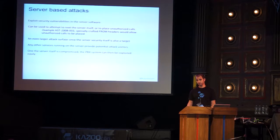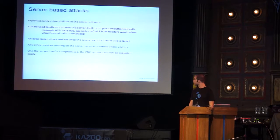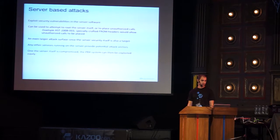Once you have access to the server, it's very easy to exploit the phone system running on it. The phone system software itself can be exploited — a good example is security vulnerability AST2008-003, which was a vulnerability found in Asterisk in 2008 that allowed a specially crafted From header to trigger outbound calls from the system. Any other services running on the server are also potentially vulnerable.